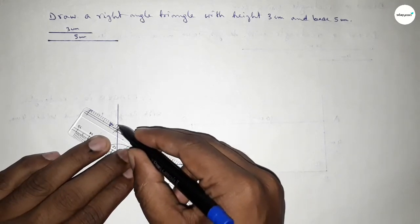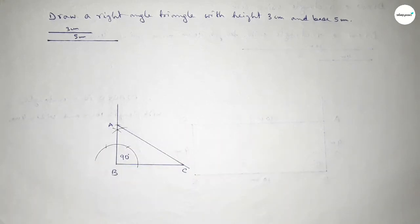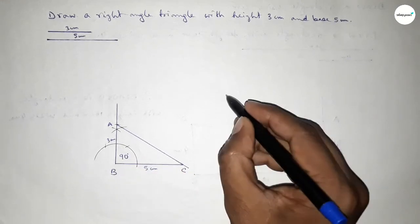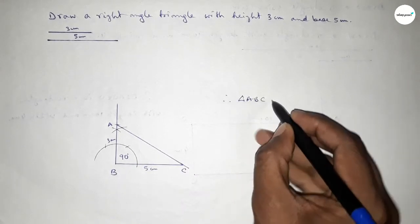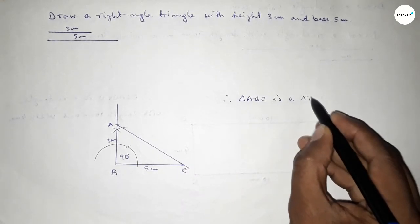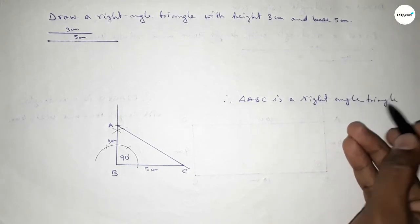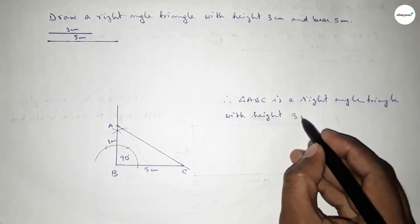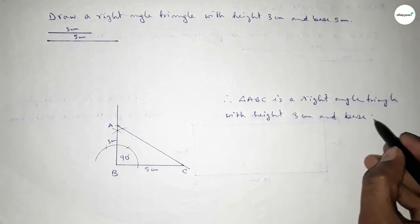Joining A and C to get triangle ABC. This side is 5 centimeter and this side is 3 centimeter. Therefore, triangle ABC is a right angle triangle with height 3 centimeter, base 5 centimeter, and angle B equal to 90 degrees.